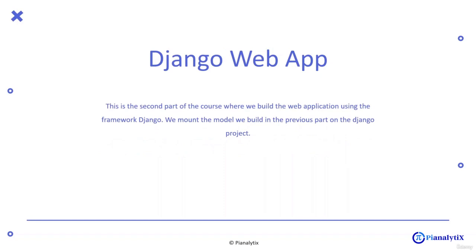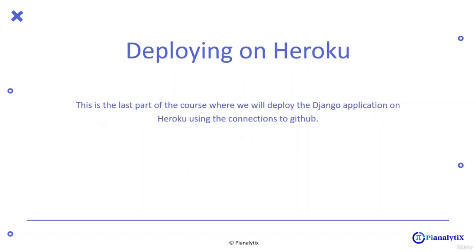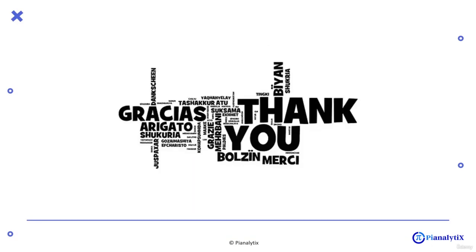The second part of the course involves building a Django project, where we will be using our Django framework and mounting our prediction model into the Django project. The last part is deploying this Django application to Heroku, using connections to GitHub while deploying. For now, let's start off with the first part of the course, which is building our model in the next video.